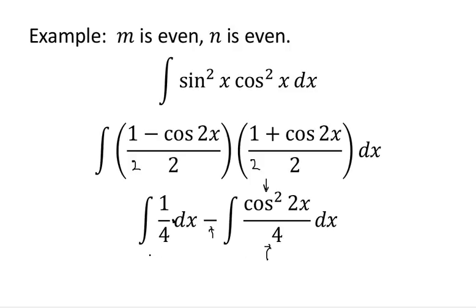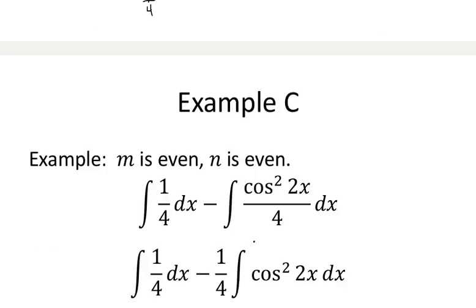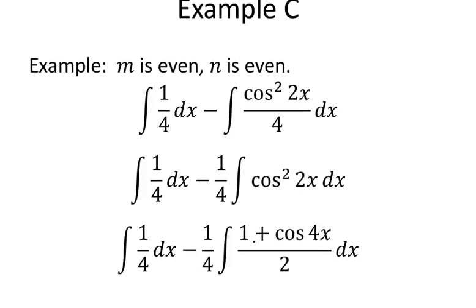The integral of one fourth gives x over 4. For the integral of cosine squared of 2x over 4, we apply the double angle identity again — basically repeating the process — and it gets reduced down to the first power: 1 plus cosine of 4x over 2, times one fourth.